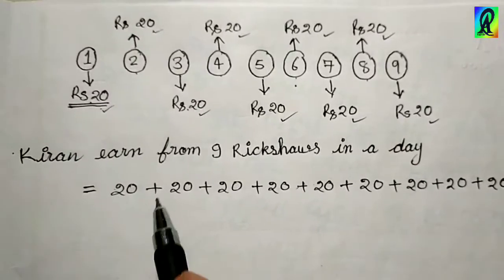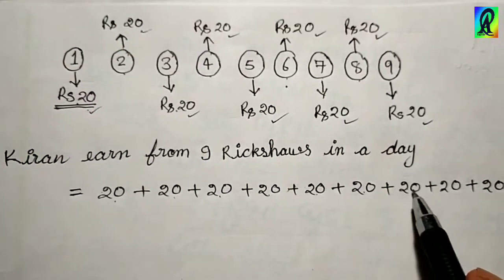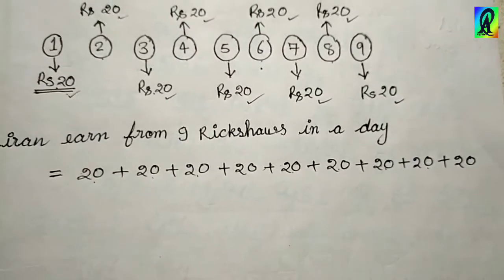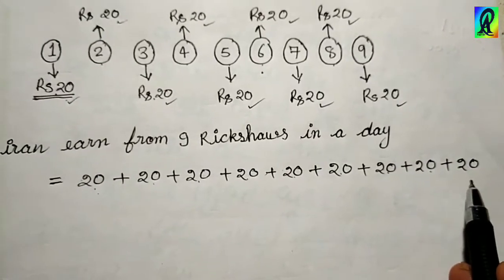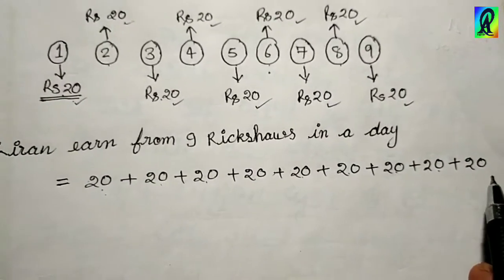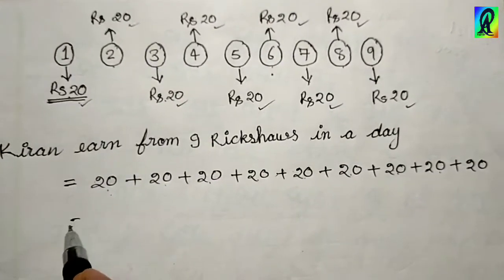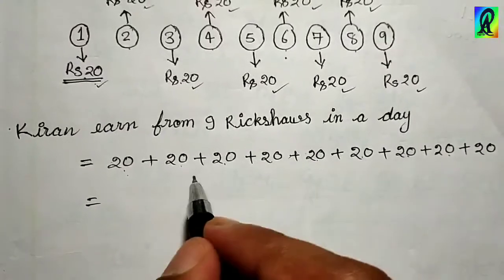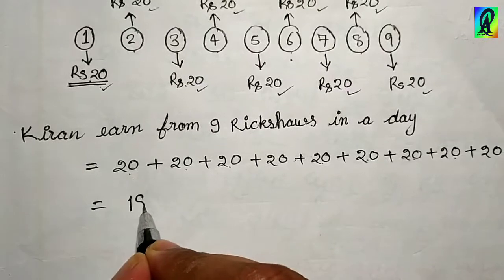Okay, 1, 2, 3, 4, 5, 6, 7, 8, 9. So here we can see that we will add 20 nine times. So we will get Kiran's earning. So let's add. When we will add we will get 180. Okay.